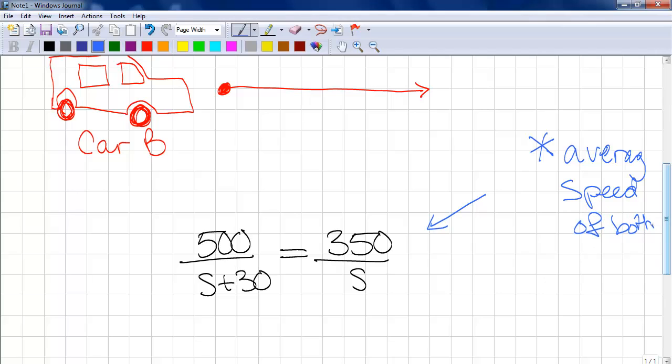In order to solve the equation, we must make them have a common denominator. So, we multiply this side by S plus 30, and we multiply the left side by S.